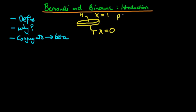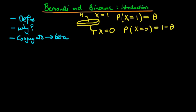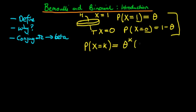We can think about the probability that we get a head — the probability that x is equal to one — and set that parameter equal to theta. Then, because the coin is never going to come up on its side in this theoretical example, the probability that x is equal to zero is equal to one minus theta. We'd like to combine both of these probabilities into a single function, so we derive the probability that x equals k, where k can equal one or zero. We say this is equal to theta to the power k times one minus theta to the power one minus k.